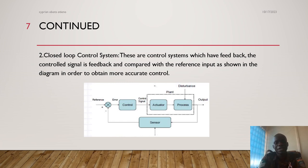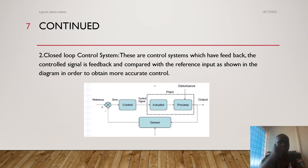Second, we have closed loop control systems. These are control systems which have feedback — that is, the control signal is fed back and compared with the reference input, as shown in the diagram, to obtain accurate control.